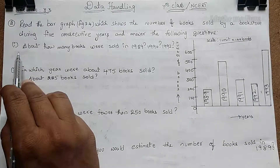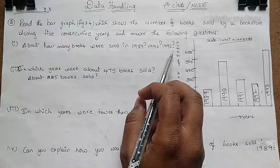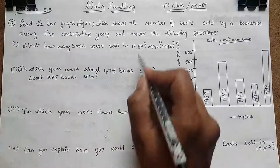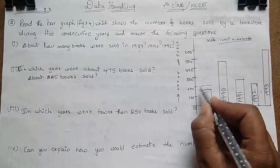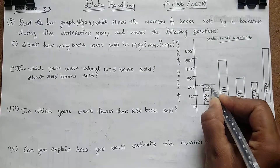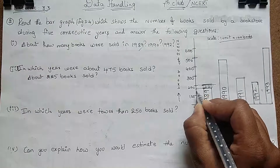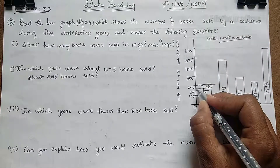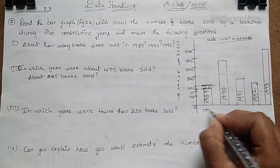Let's start from the first question: about how many books were sold in 1989, 1990, and 1992? For 1989, the bar is just below the 200 line mark. The middle point between 100 and 200 is 150, but it is just above 150 and just below 200, so it seems to be 170 or 180 books. I am taking it as approximately 170 books.